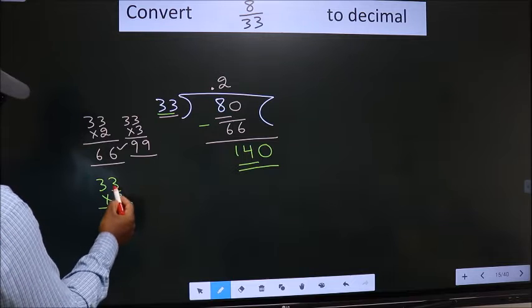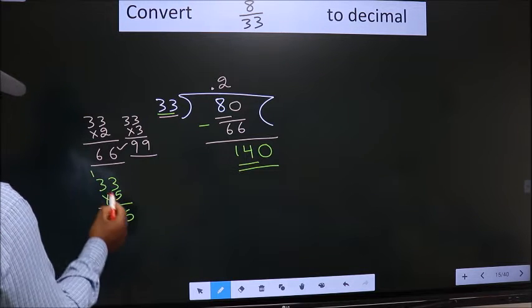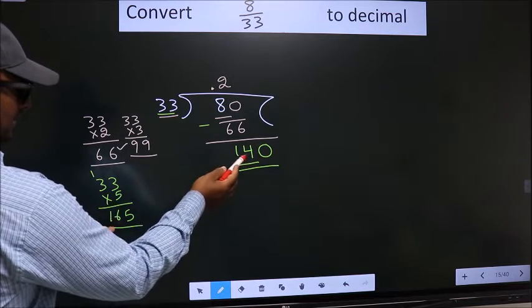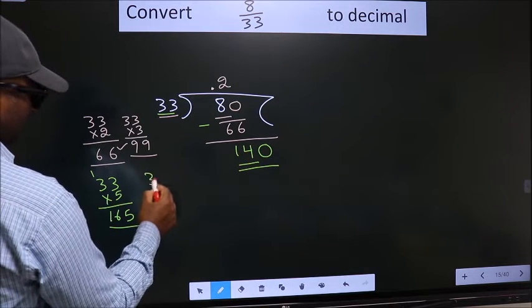33 times 5: 5 times 3 is 15, 5 times 3 is 15 plus 1 equals 16. 165 exceeds this, so we should go with 4.